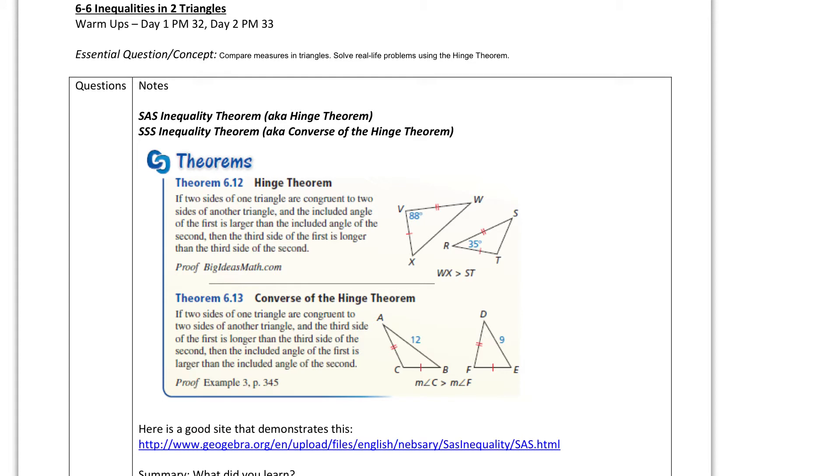If two sides of one triangle are congruent to two sides of another triangle, and the included angle—so notice this angle is between these two, same thing here—and the included angle of the first is larger than the included angle of the second, then the third side will be larger than this one. So imagine these two are right here, hinged. That's why we call it a hinge theorem. They're hinged.